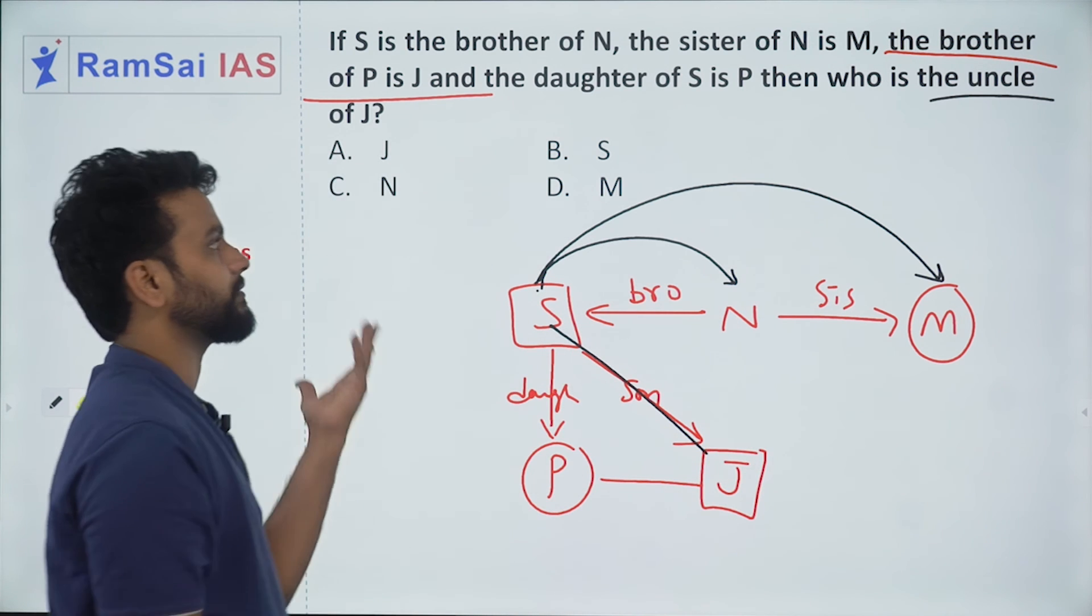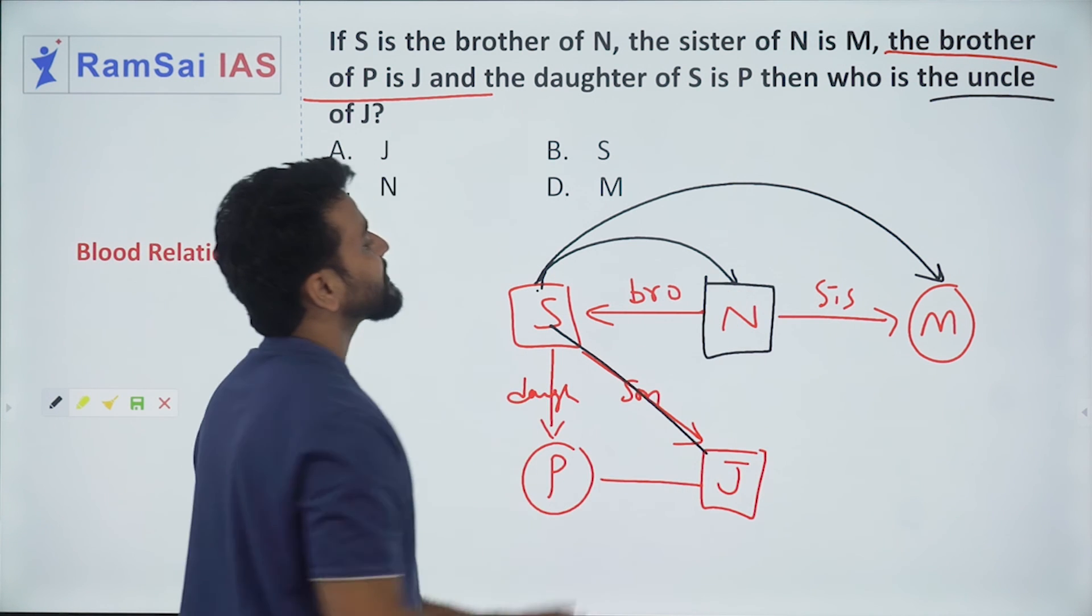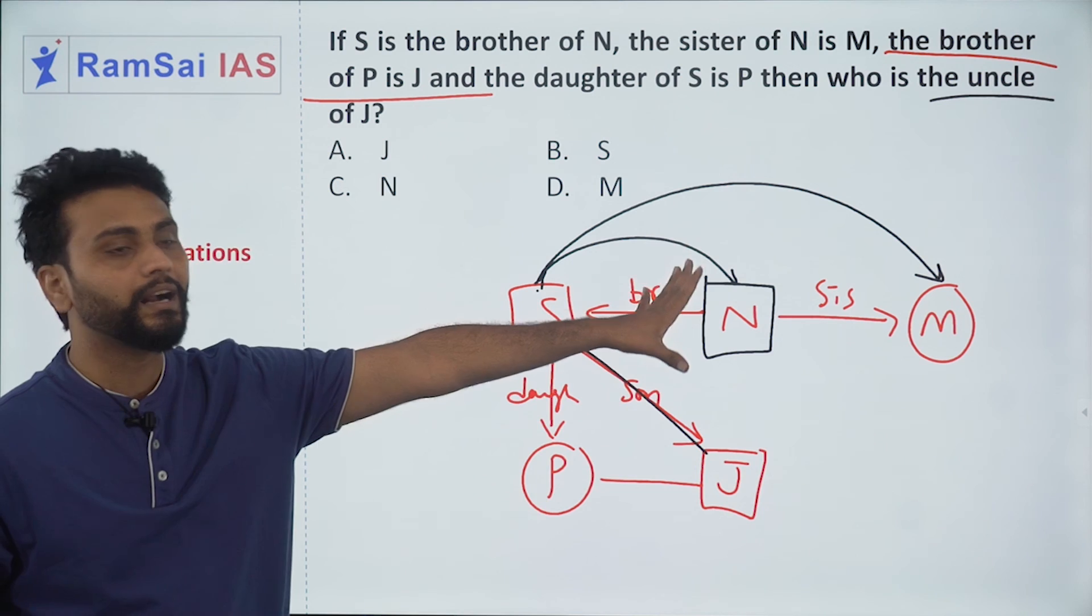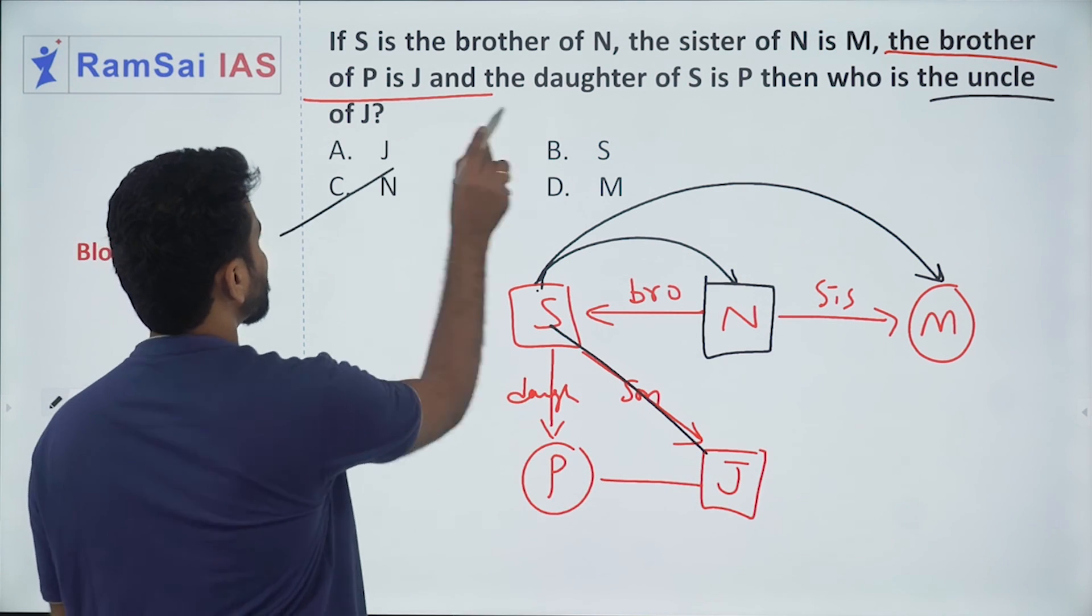But from the question, we have to interpret that N is a male and N is the only possibility to be uncle for P and J. So I will go with option C, N.